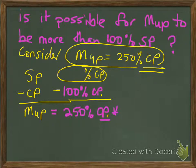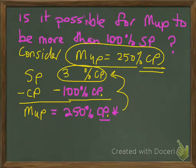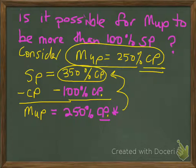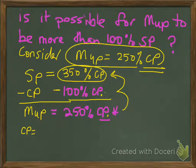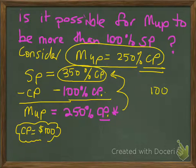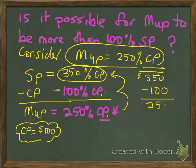What percentage of cost price do I subtract from 100% of cost price so that I end up with 250% of cost price? Using common sense and logic, the number that goes in the top row must be 350% of cost price. So if I start off with 350% of cost price equal to my selling price and subtract 100% of my cost price, that leaves me with a remainder of 250% of cost. Putting dollars to this: if my cost price is $100, then 350% of cost price is $350, and when I subtract that I'm left with $250 — that's my markup.